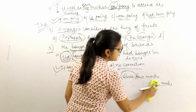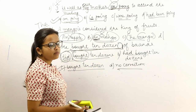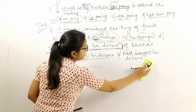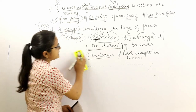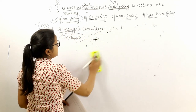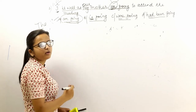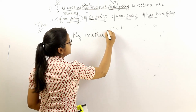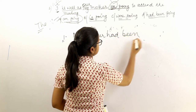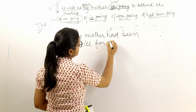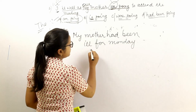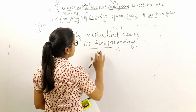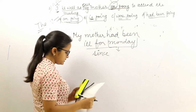If you have short sentences, read them twice — sometimes errors are easy to spot. For longer sentences, you must analyze the tense and sentence structure carefully. For example: 'My mother had been ill since Monday.' Here we use 'since' because Monday is a particular, definite point in time — not an approximation.